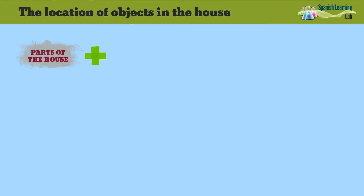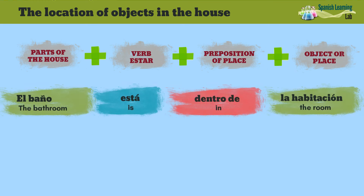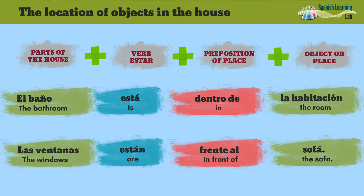To talk about the location of a room or part of the house in Spanish, first say the part of the house, then add the verb estar in its forms está or están. Then add a preposition of place such as junto a or sobre. And finally, add a place of reference. For example, el baño está dentro de la habitación. Las ventanas están frente al sofá.